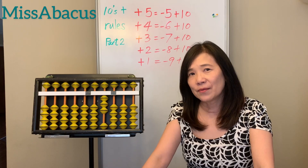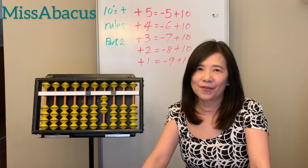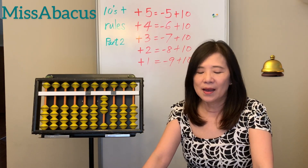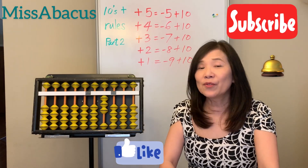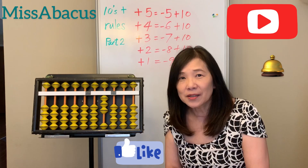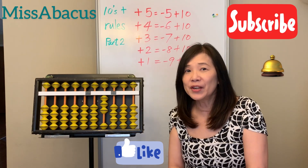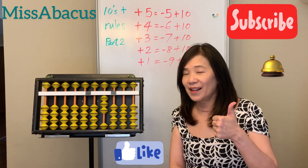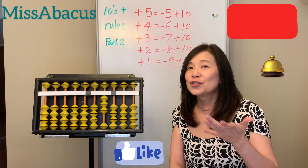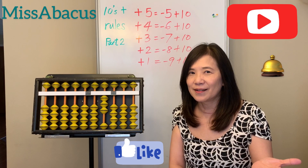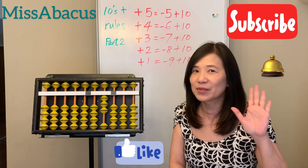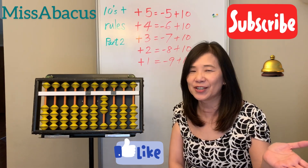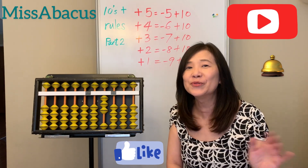That's for today. Just remember these five pairs: one-nine, two-eight, three-seven, four-six, five-five. Thank you for watching. If you like my video, please give me a like, share, and don't forget to subscribe and turn on notifications. See you next time!